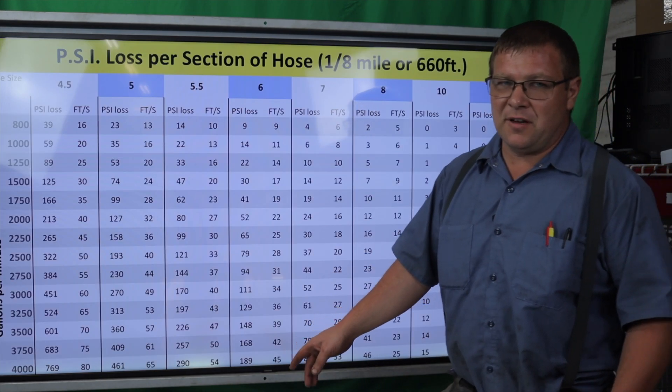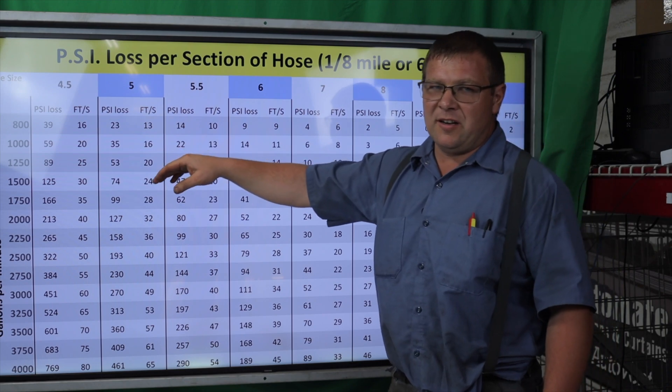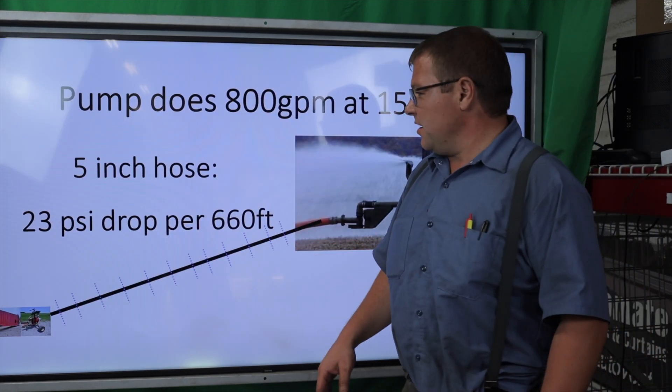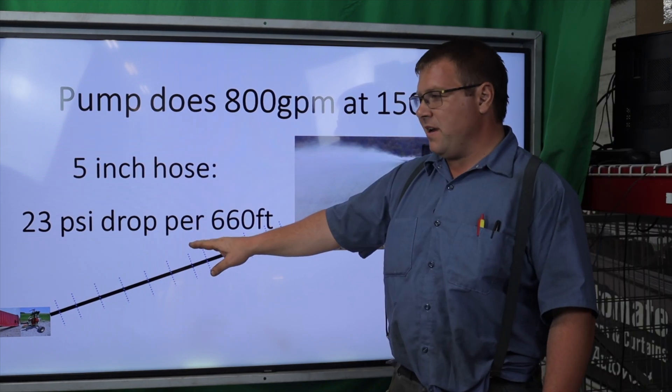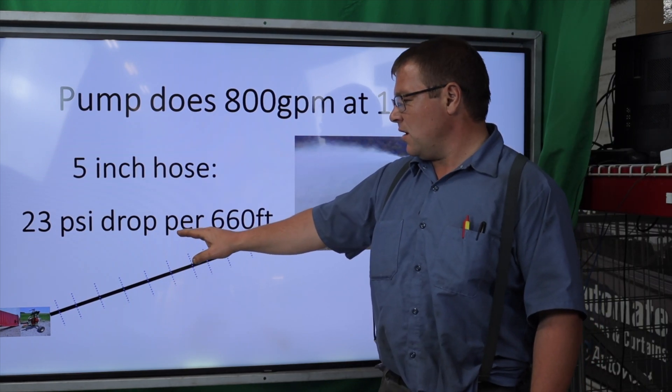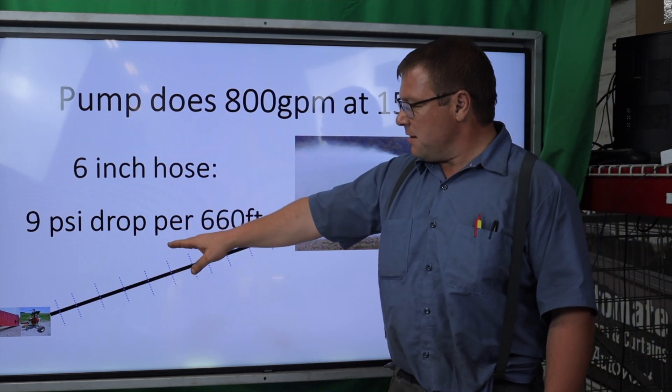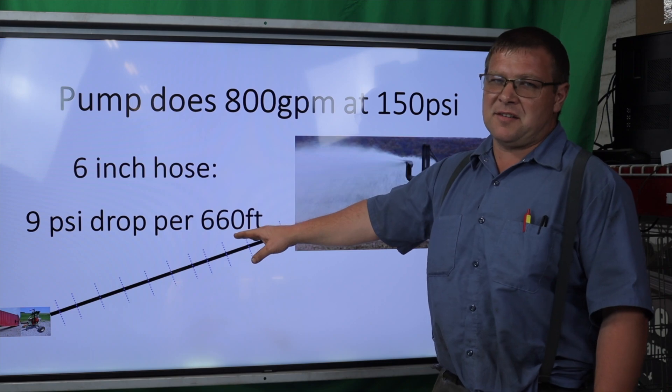Now we can go to our PSI loss chart. We're looking at 800 gallons per minute. With five inch hose, that's 23 PSI of loss per 660 feet or 200 meters. With six inch supply hose, 9 PSI per 660 feet.